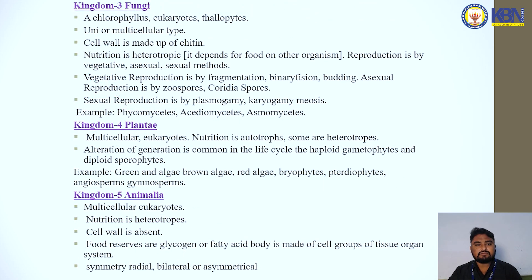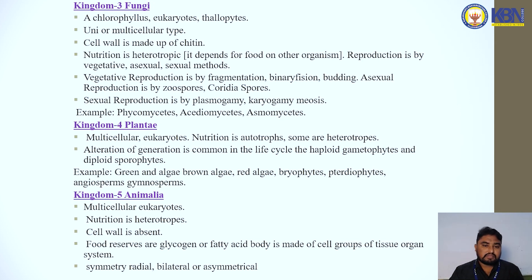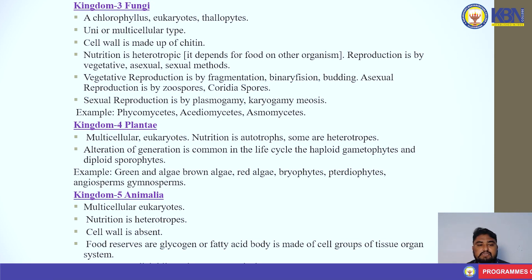Next is Kingdom Fungi — chlorophyll-less eukaryotes and heterotrophs, unicellular or multicellular. The cell wall is made up of chitin. Nutrition is heterotrophic. Vegetative reproduction is by fragmentation, binary fission, or budding. Asexual reproduction is by zoospores or conidia spores. Sexual reproduction involves plasmogamy, karyogamy, and meiosis. Example: Phycomycetes.